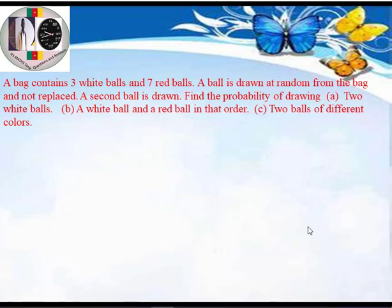Hello guys. Today we'll be talking about probability. The question before us says that a bag contains three white balls and seven red balls. A ball is drawn at random from the bag and not replaced. A second ball is drawn. Find the probability of: (a) two white balls, (b) a white ball and a red ball in that order, (c) two balls of different colors.